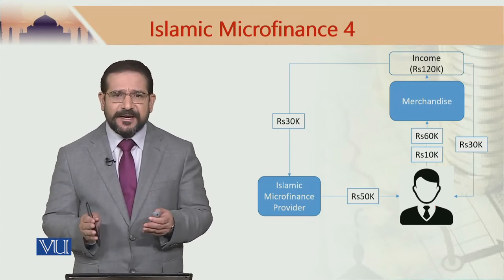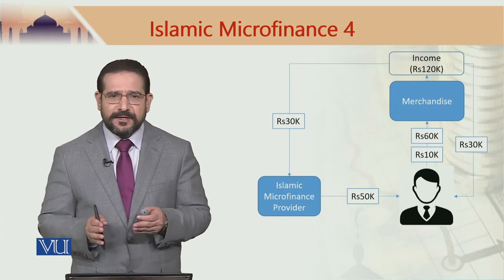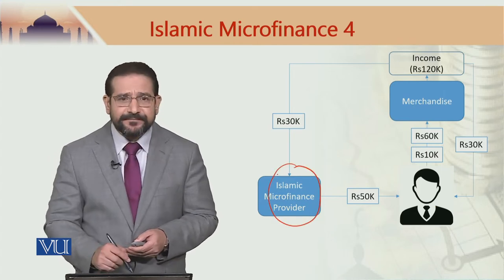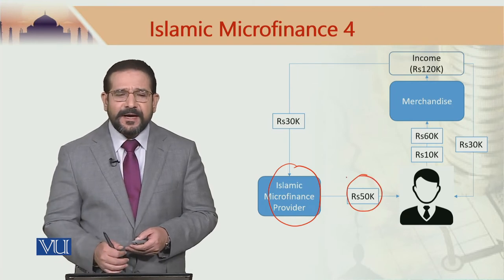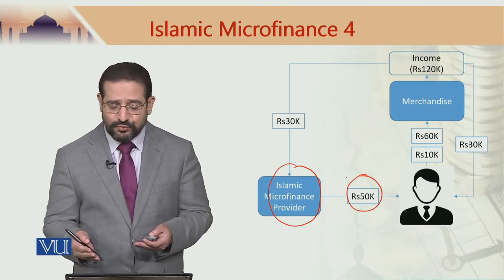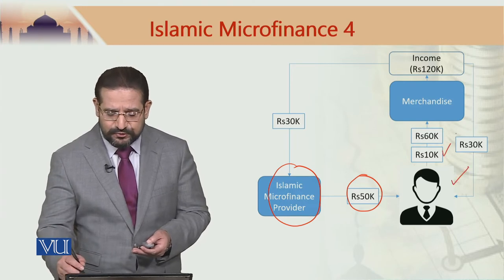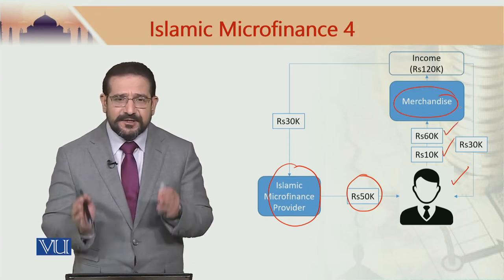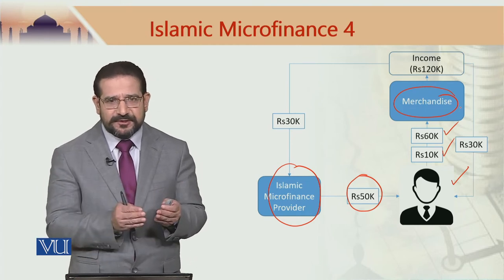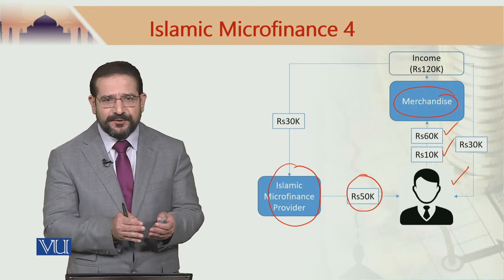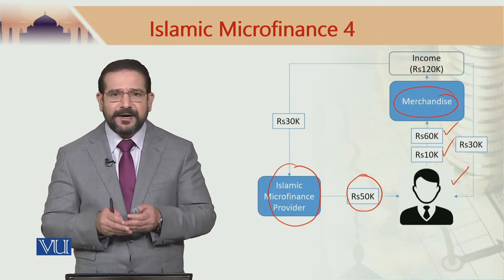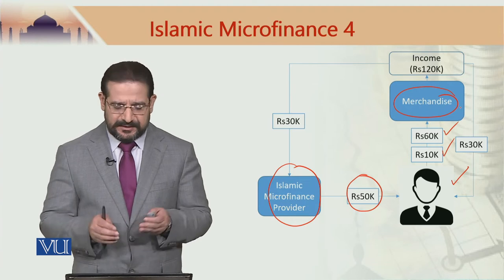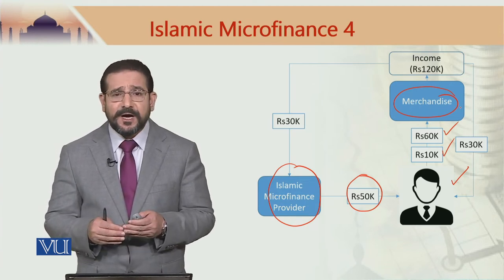Let us look at a generic model of Islamic microfinance based on Musharakah. The Islamic microfinance provider offers 50,000 as finance to a recipient who also contributes 10,000 in the business. So 60,000 is the total Musharakah capital — 50,000 provided by the Islamic microfinance company and 10,000 provided by the recipient. In this case, the recipient does the business, while the Islamic microfinance provider could be a silent partner.